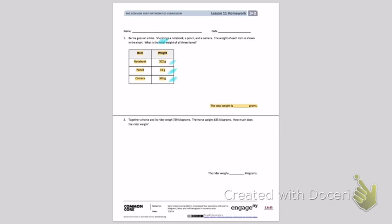So I am going to create an addition sentence to find the total. I am going to start by making a tape diagram to show the three groups. My smallest group is going to be 10 grams, which is my pencil. Then I am going to have about two equal groups for 312 grams, my notebook, and 365 grams, my camera.